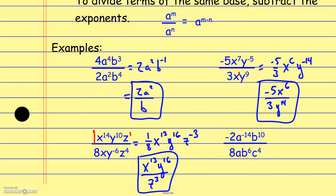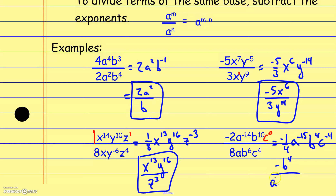In this last one, negative 2 over 8 reduces to negative 1 fourth. Subtracting exponents gives a to the negative 15th and b to the fourth. For c, there's no c value in the numerator — it's like c to the zero — so subtracting gives c to the negative fourth, which sends it back to the denominator. The final answer is negative b to the fourth over 4a to the 15th times c to the fourth.